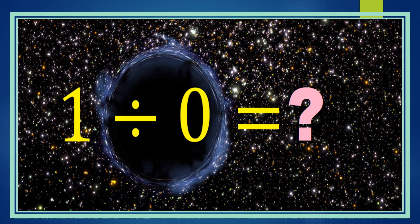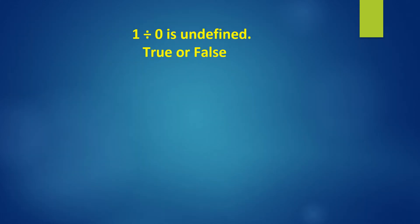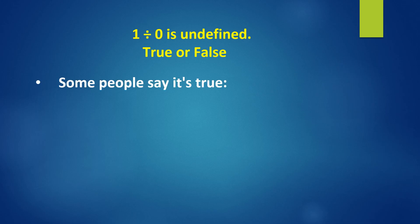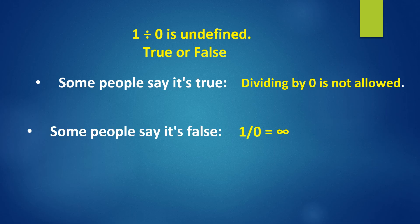One divided by zero is how much? Today our topic is division of a number by zero — what exactly zero is. It is our Indian mathematicians of ancient India who really came up with a concrete and comprehensive meaning of zero as a concept, as a digit, as a limit, and as a nullity. So let's see what is the answer for one divided by zero. Is it undefined or is it infinity? Some people say it's true that dividing by zero is not allowed, and some say one by zero equals infinity. So which one is correct? Let's find out.